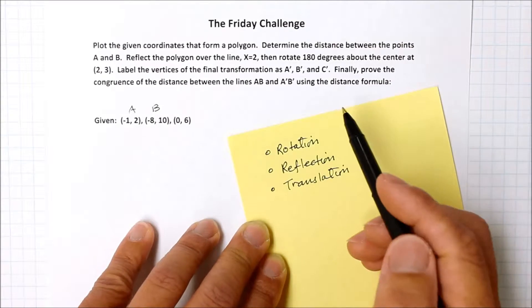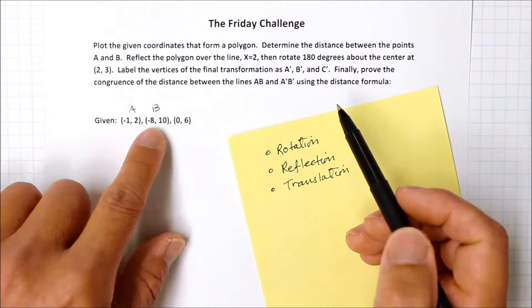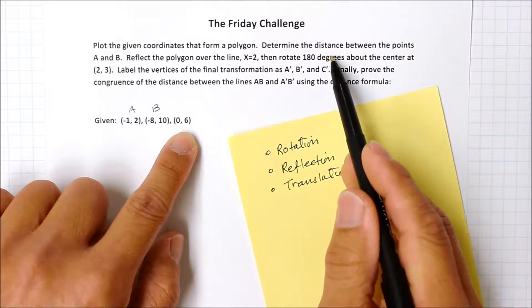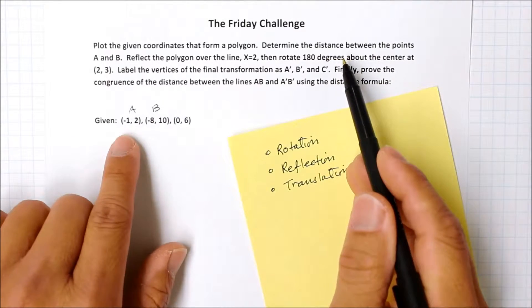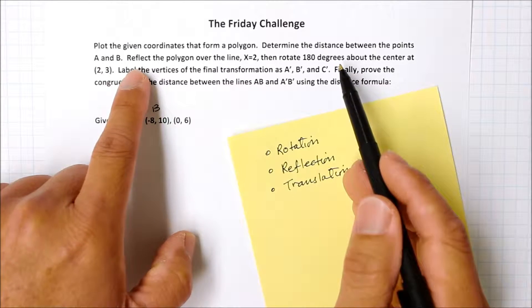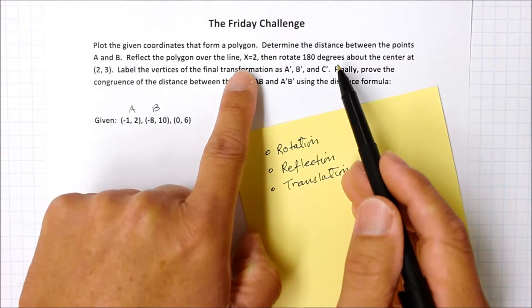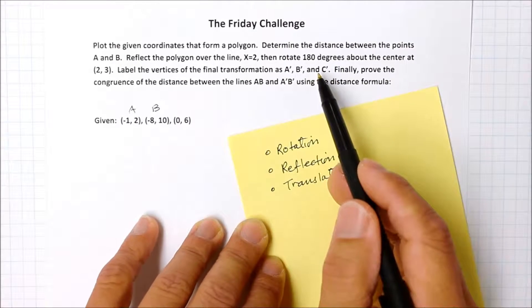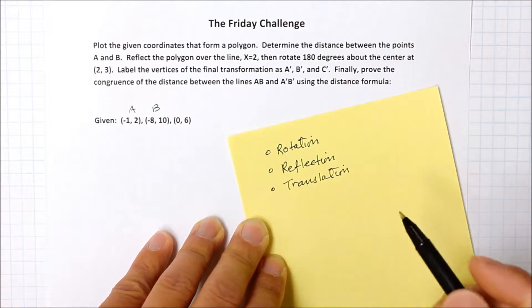This problem asks us to plot these three points, determine the distance between points A and B, transform it by reflecting over the line of reflection where x equals 2, and then rotate it. Holy moly, there's a lot of stuff going on.